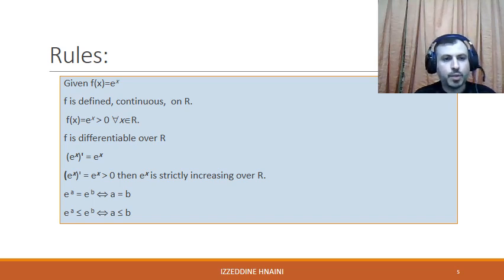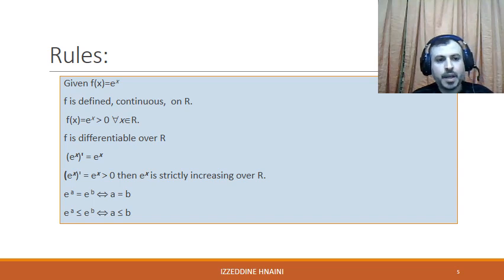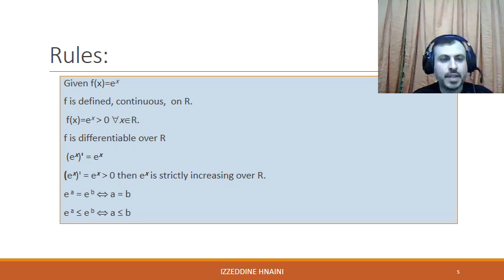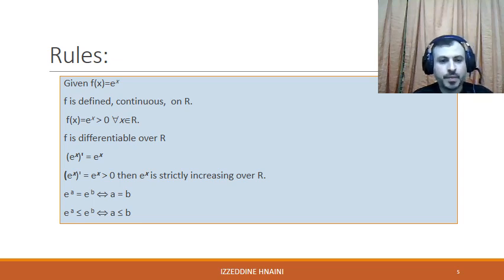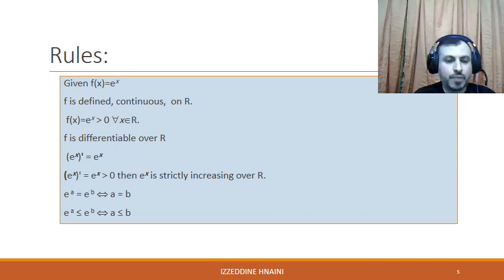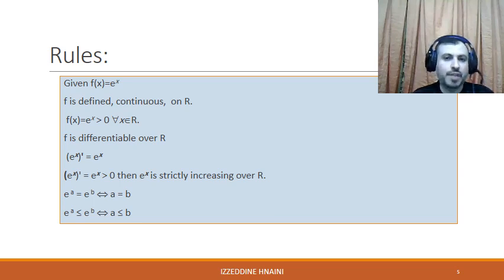Properties of the exponential function. First property: the function eˣ is defined and continuous on ℝ. As we saw in the previous slide, we determined the domain of definition of the inverse function of ln(x), and we get it is (−∞, +∞).